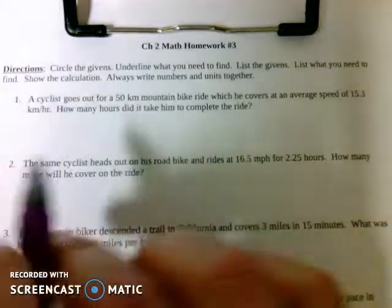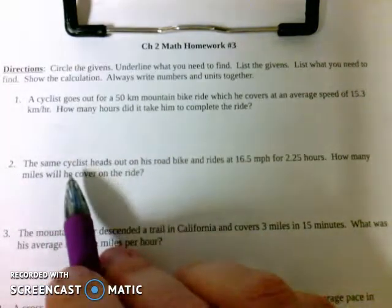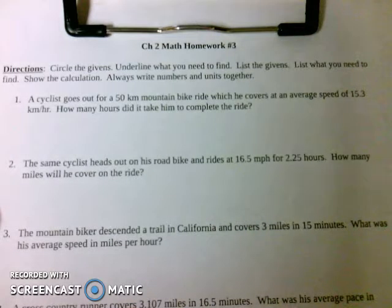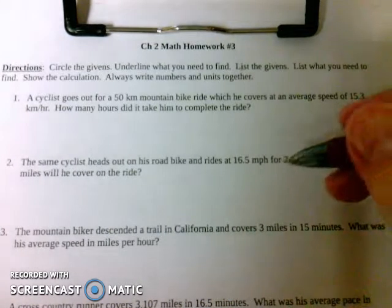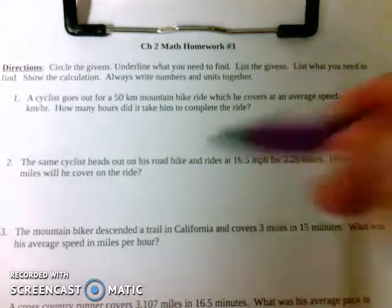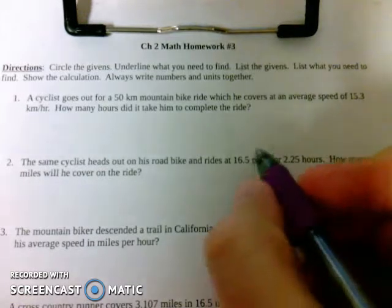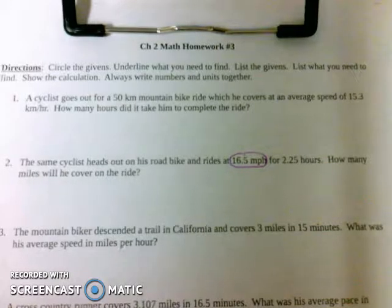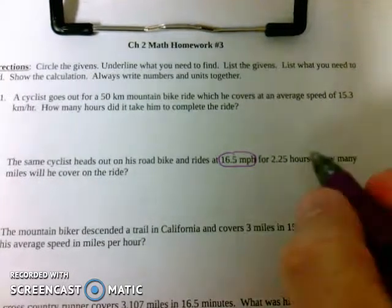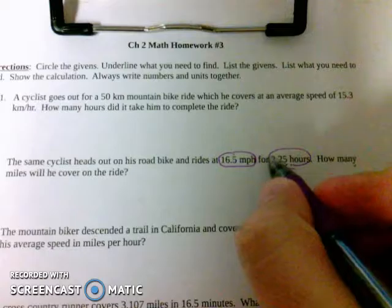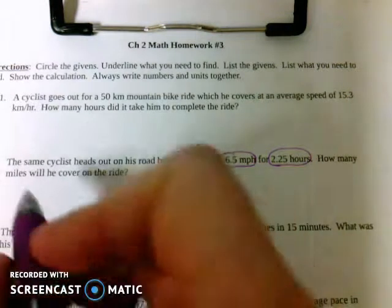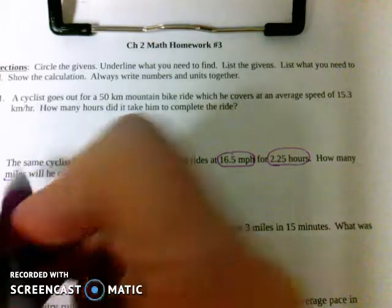So we're going to start with number two. This says the same cyclist, a cyclist from problem number one, heads out on his road bike and rides 16.5 miles per hour for 2.25 hours. How many miles will he cover on the ride? Well, it looks like we've got a speed given in miles per hour, so it's a given, and it looks like we have a time given in hours. And then what are we trying to find? We're trying to find how many miles. We'll underline that.